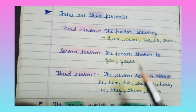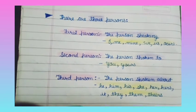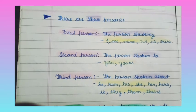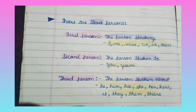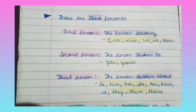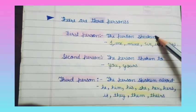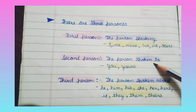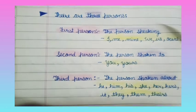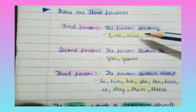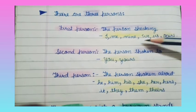The first person is the person who is speaking. For example, I am speaking and my friend is listening — I am the first person, my friend is the second person, and the girl I am talking about is the third person. First person examples: I, me, mine, we, us, ours.